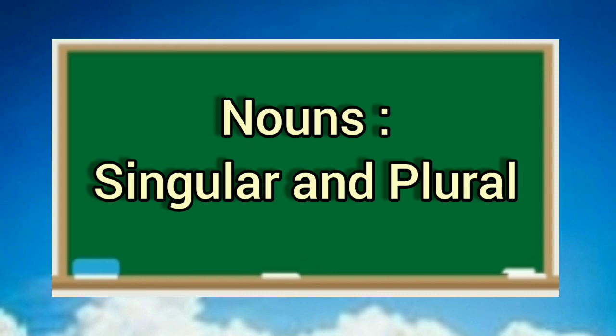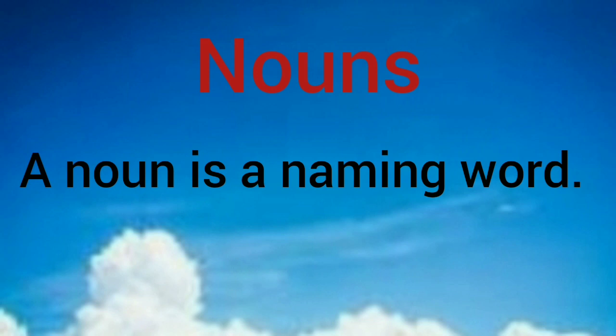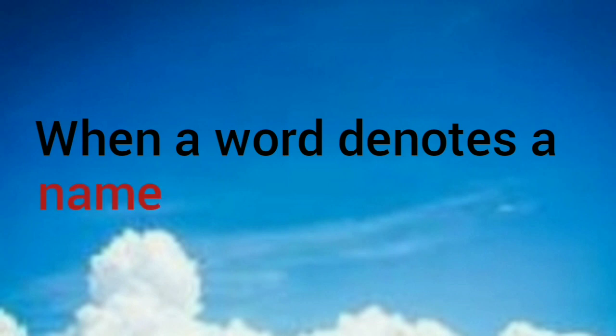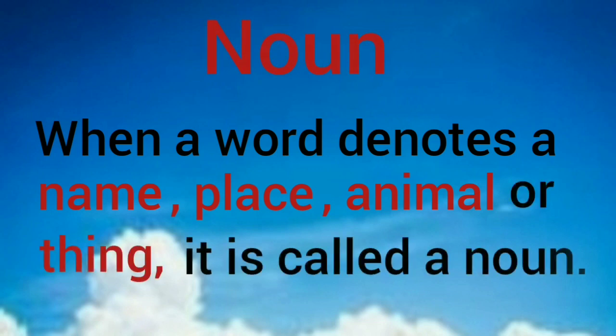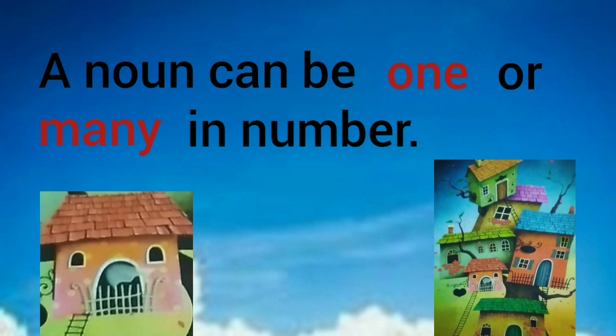Nouns: singular and plural. Let us know what is a noun. A noun is a naming word. When a word denotes a name, place, animal or thing, it is called a noun. A noun can be one or many in number.